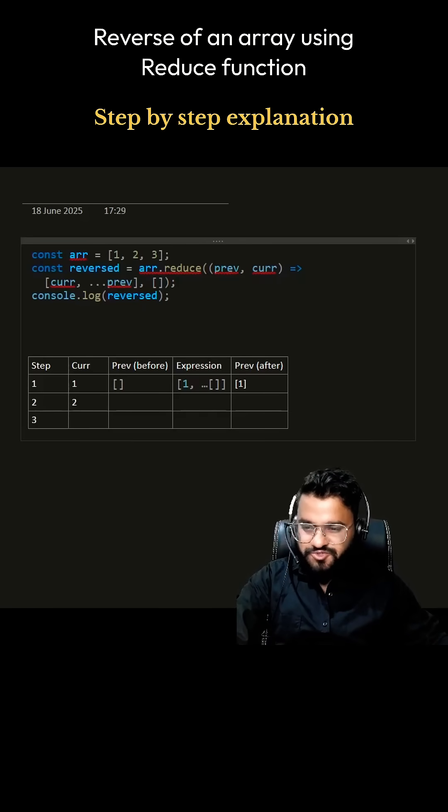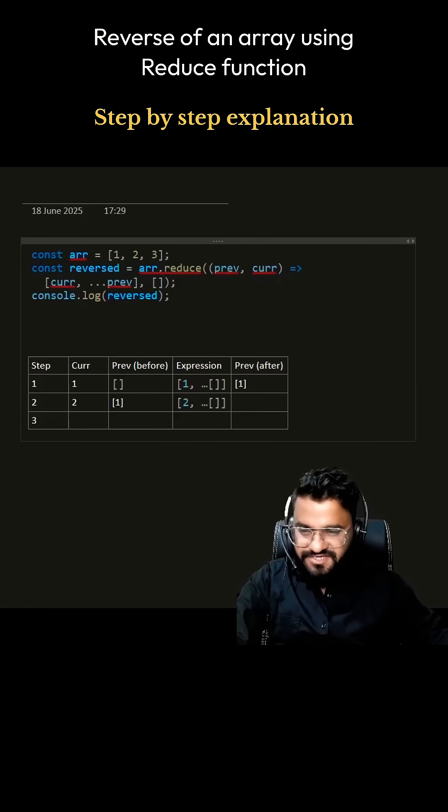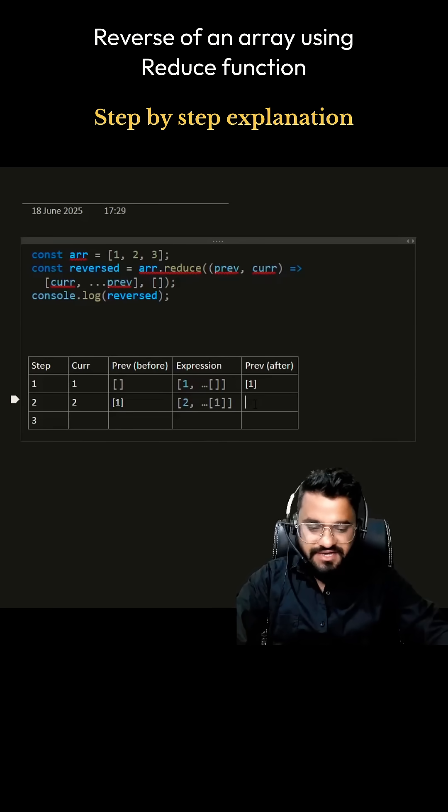Previous value will be now 1, okay? And expression will be like this, this is your current value. And so it will be 1, right? This one. So after evaluation, your array will look like 2 comma 1.